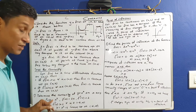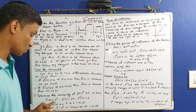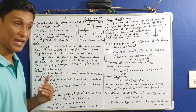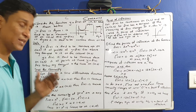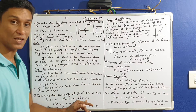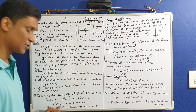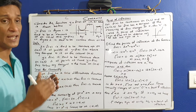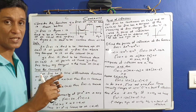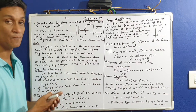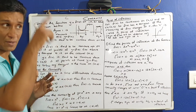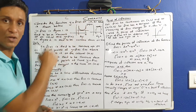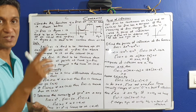Notice that f prime x equals 2x and f double dash x equals 2 on the interval minus infinity to infinity. Since f double dash x equals 2, which is greater than 0, the function is concave up. We will tell you this is the u shape.